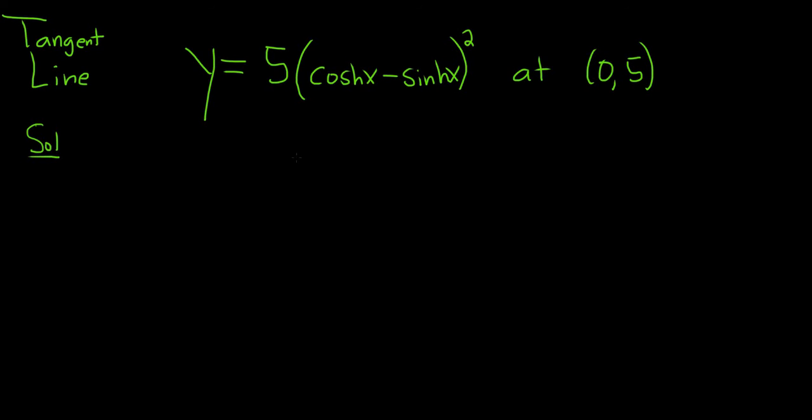So we already have a point, we just need the slope. The slope of the tangent line is the derivative. So the very first step in this problem is to take the derivative of this function.